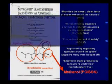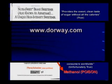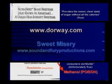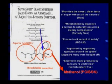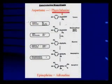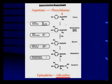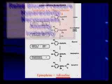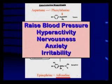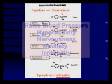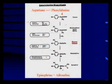If you want all the dirt on aspartame — where it came from and how it ever got approved — it's on the website dorway.com — D-O-R-W-A-Y.com. There's also a very good movie called Sweet Misery, made by soundandfuryproductions.com. Now, what about the phenylalanine? This middle component breaks down into neurotransmitters called catecholamines. Aspartame gives you phenylalanine, which goes into tyrosine, then dopa, dopamine, norepinephrine, and finally epinephrine — the other word for epinephrine is adrenaline. So every molecule of aspartame gives you one molecule of adrenaline, which can raise blood pressure, cause hyperactivity, nervousness, anxiety, and irritability. The really serious symptoms come when dopamine is produced at too high levels into the substantia nigra without enough antioxidants — that can lead to Parkinsonism. And these pathways can affect the memory centers of the brain, potentially contributing to Alzheimer's disease if you don't have enough antioxidants.